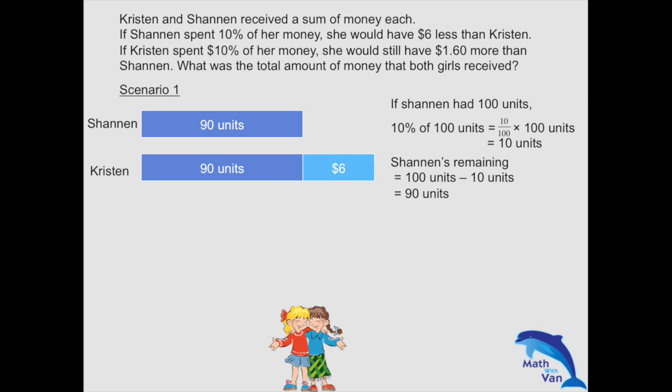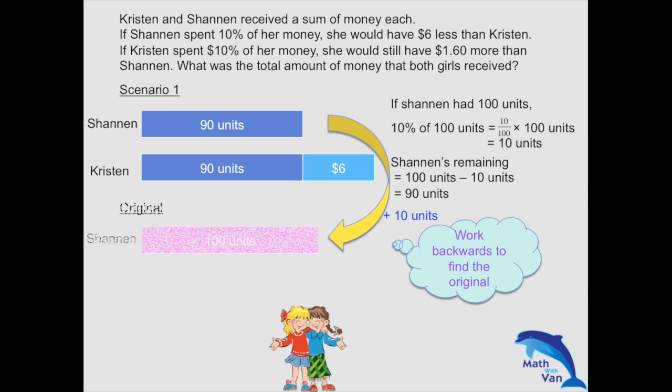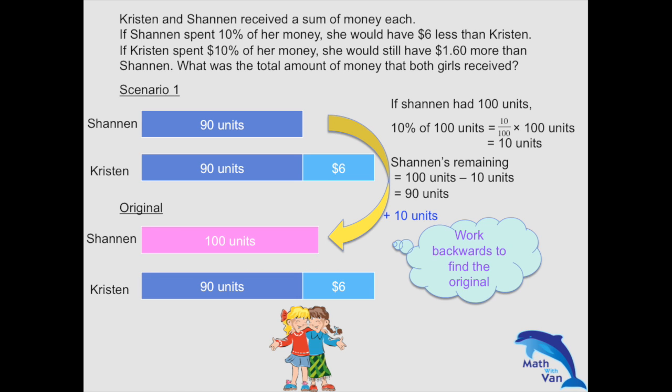Remember, these two values are after scenario 1. So what is the original? The original is 100 units for Shannon, and nothing has changed for Kristen. So Kristen would be 90 units plus $6. These two figures show how the amount of money is related: Shannon has 100 units, and Kristen has 90 units plus $6.